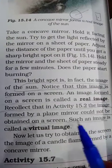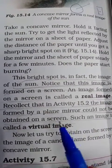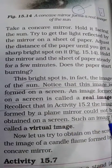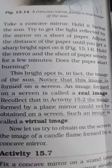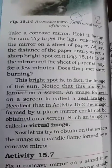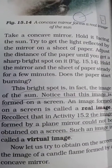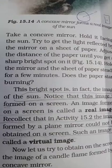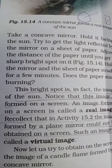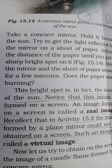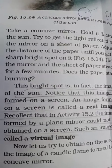The image formed in a plane mirror cannot be obtained on a screen — such an image is called a virtual image. So there are two types of images: if an image can be obtained on a screen, it is a real image; if it cannot be obtained on a screen, it is a virtual image.